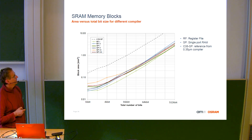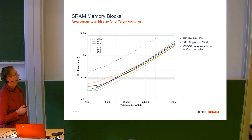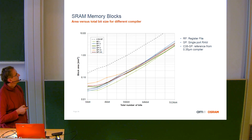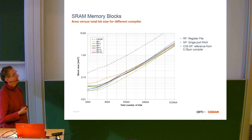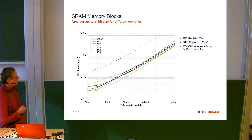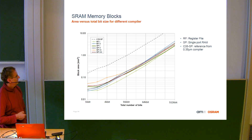Comparing process nodes: at 0.35 µm minimum line width versus 0.18 µm, you see a factor of four to eight improvement. Changing the process node from 0.35 µm with a certain amount of memory, you can get 10 times the number of bits in the same area — a huge step. Going down to 40 nanometers would bring you into really small areas.